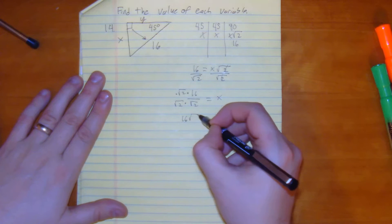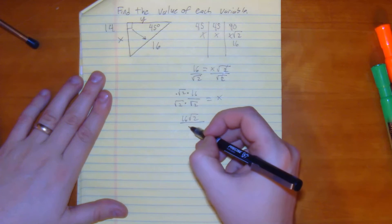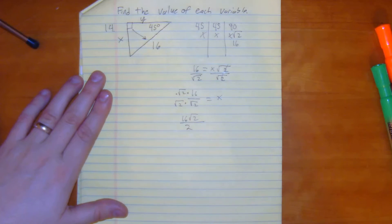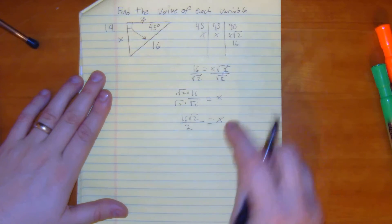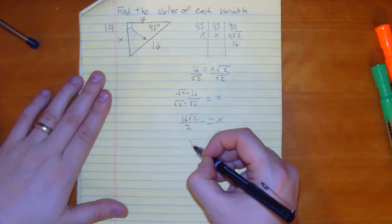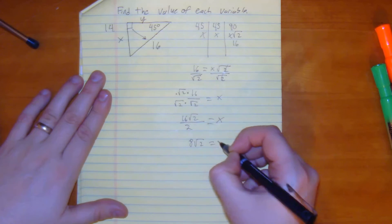So we get 16 square root of 2 all over 2. Equals x. We're still not done. 16 divided by 2 would be 8. So it would be 8 square root of 2 equals x.